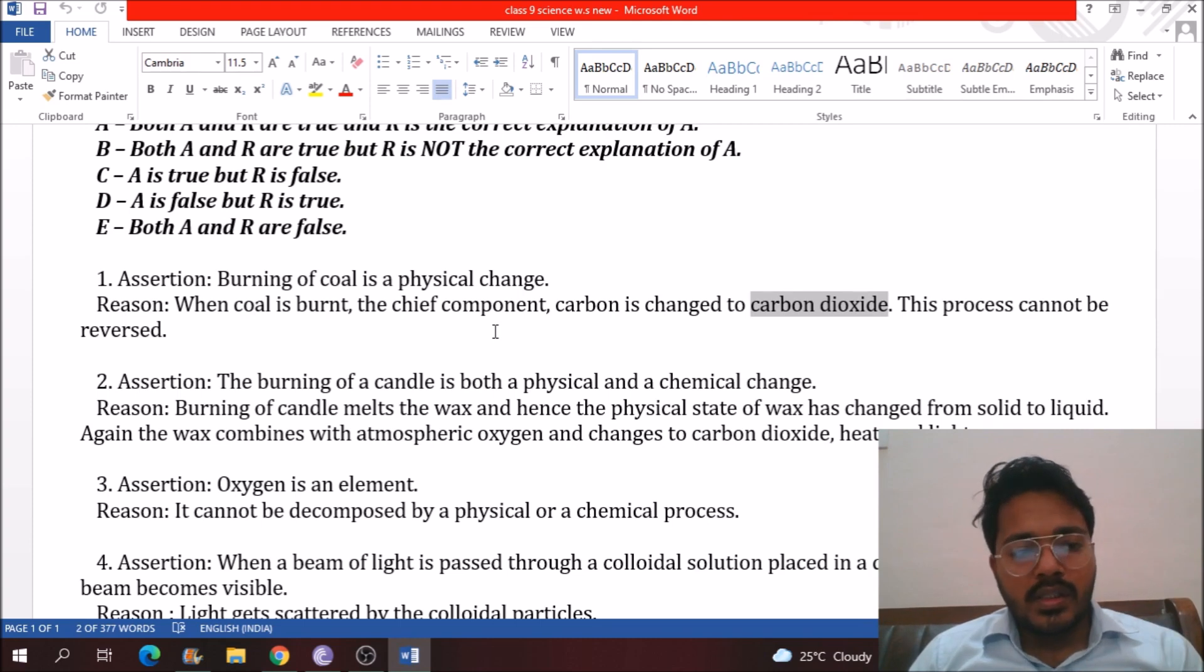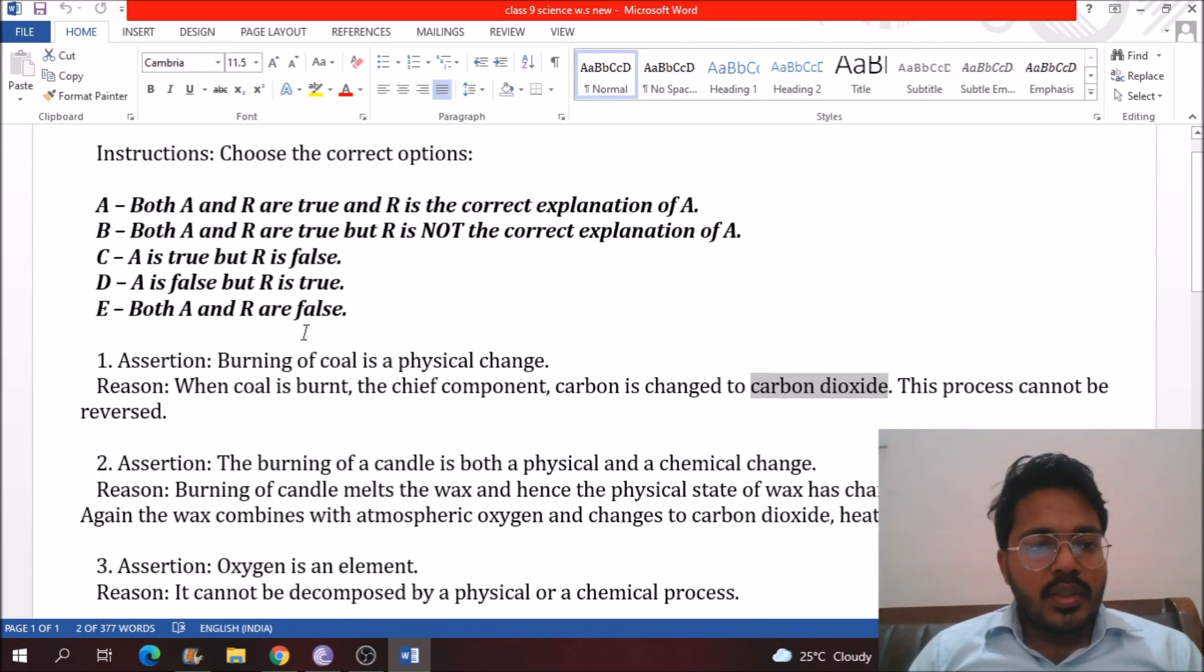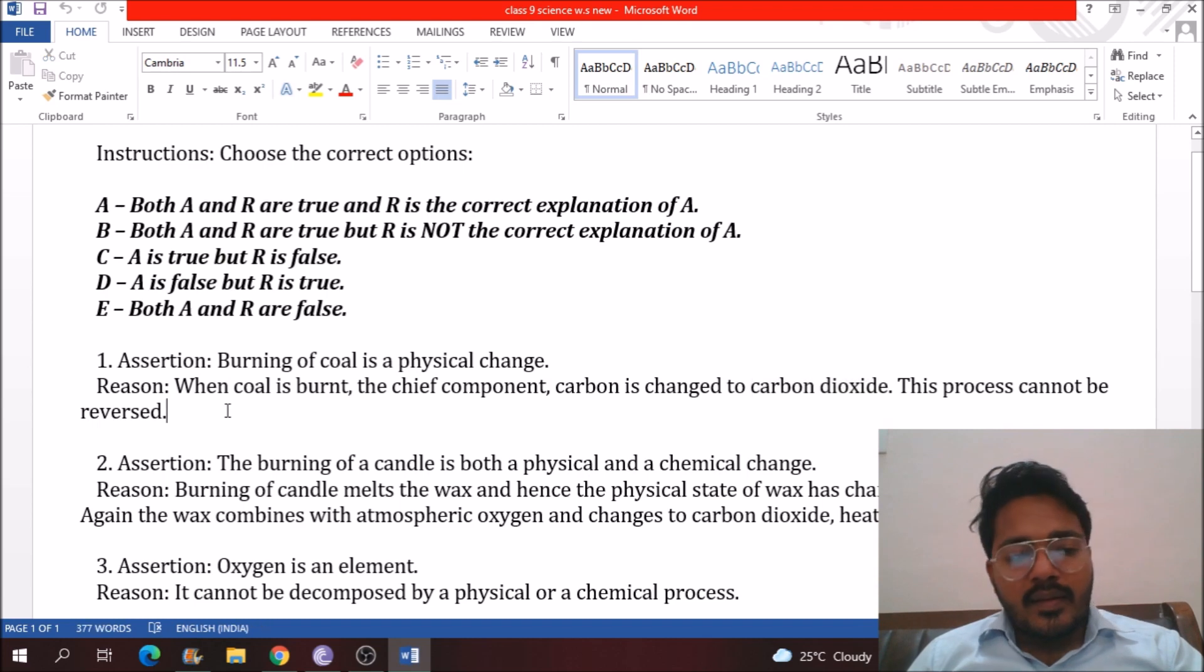This is correct because when you burn coal the carbon is converted into carbon dioxide because oxidation takes place. And this is a chemical change. It cannot reverse. You can't convert carbon dioxide into carbon again. So according to this question, A is false and R is true. That means the correct answer of this question is option number D.